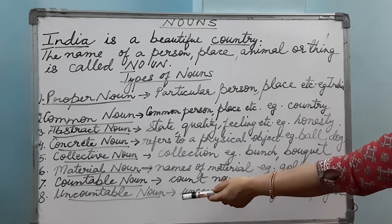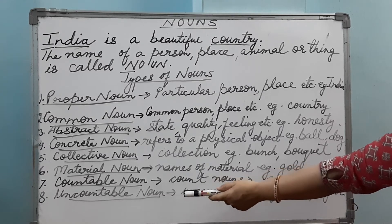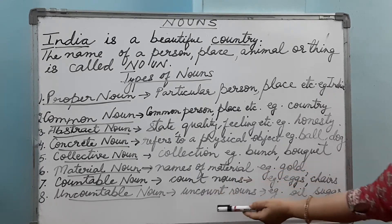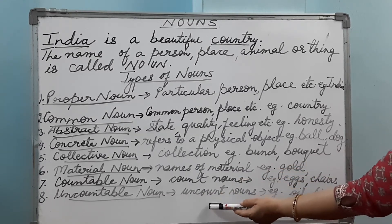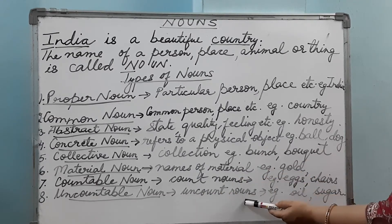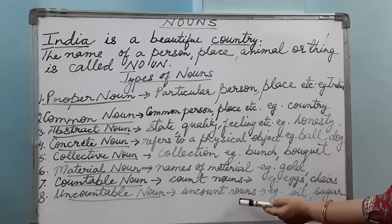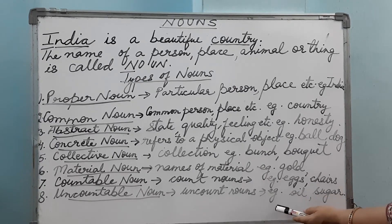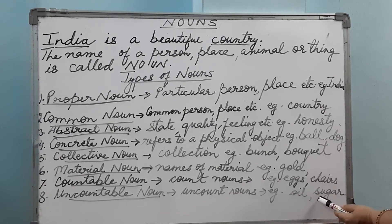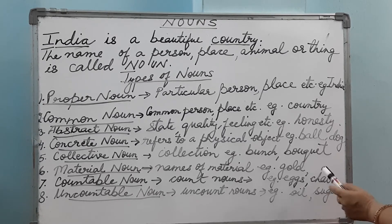Uncountable noun — again, as the name suggests, they are also known as uncount nouns. You cannot count uncountable nouns. Examples: oil, sugar, water, etc.